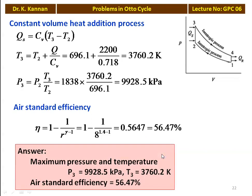Answers: Maximum pressure P3 equals 9928.5 kPa, maximum temperature T3 equals 3760.2 Kelvin, and air standard efficiency is 56.47 percent.